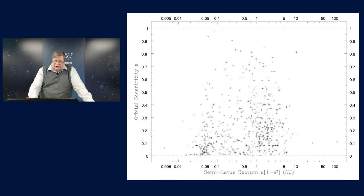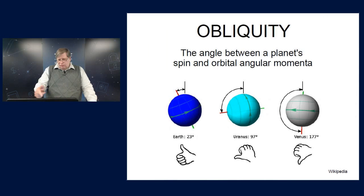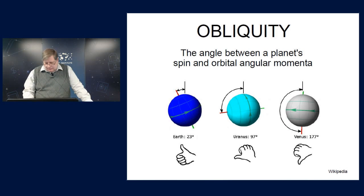So, well, in addition to decreasing e and a, tides in the planet also tend to reduce its rotation rate and its obliquity. What do I mean by obliquity? Here I'm defining it as the angle between a planet's spin and orbital angular momenta, as defined by the right-hand rule. Sometimes it's defined as the angle between a planet's equator plane and the orbital plane, but this is more convenient because it helps to define a retrograde rotation that's more than 97 degrees, which is not all that uncommon.